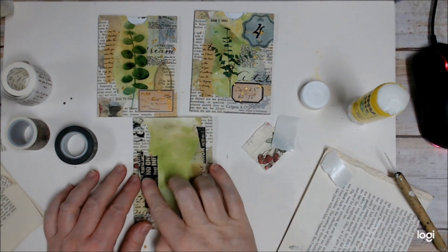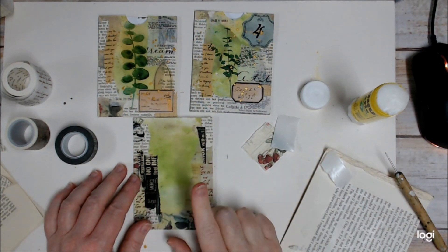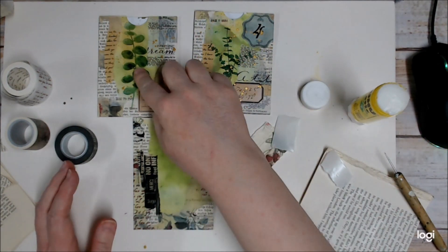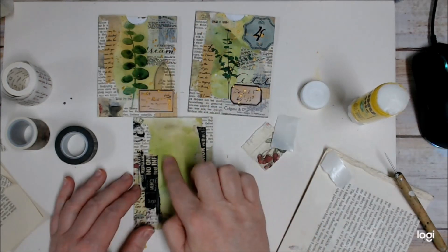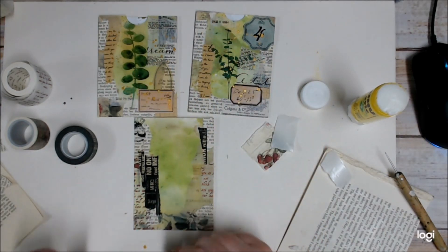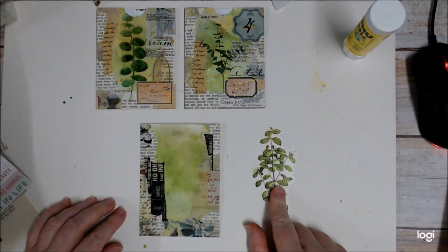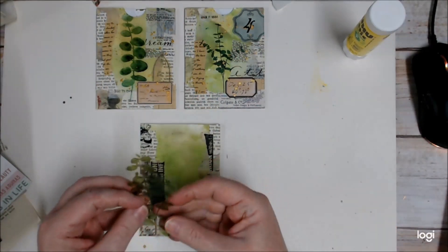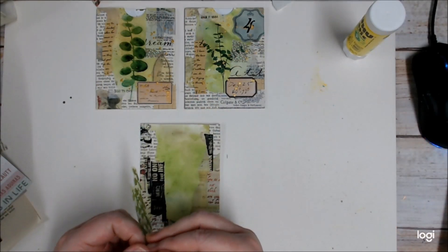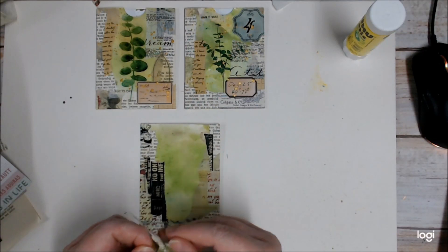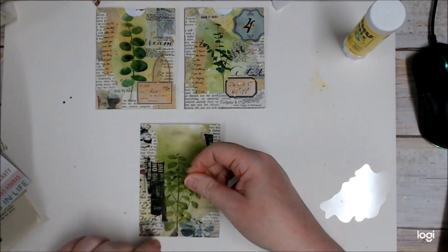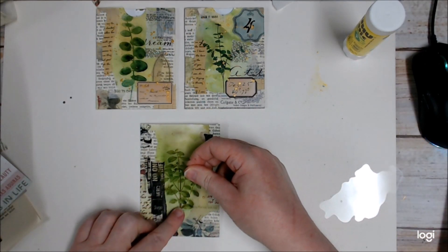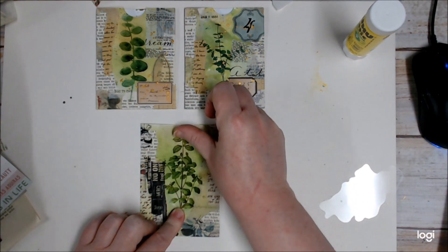So now I want to put a focal image on. So you could use a sticker like I've used these plant stickers here. You could use a fussy cut if you've got something that you've already cut out. So for my focal point I've chosen this plant sticker. Just pop that roughly in the middle there.